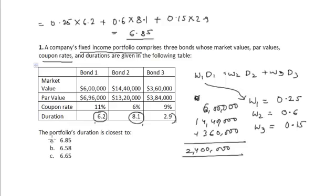The correct option is option A: the portfolio duration is closest to 6.85.